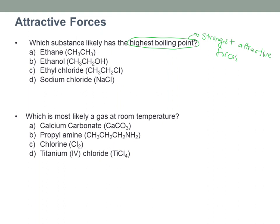I'm going to go through these. If I look at ethane, I see that there are only C's and H's, so I know it's a nonpolar molecule because C and H only form nonpolar bonds. Based on that flowchart, nonpolar means it has the dispersion force, which is the weakest one of all of them.